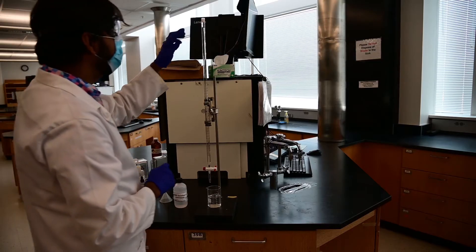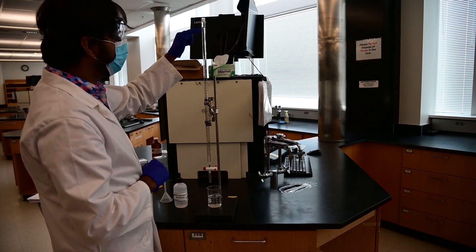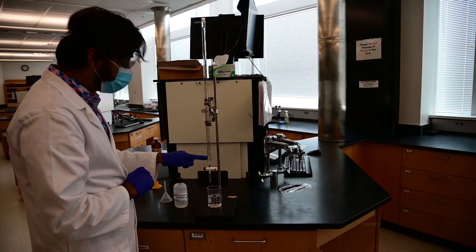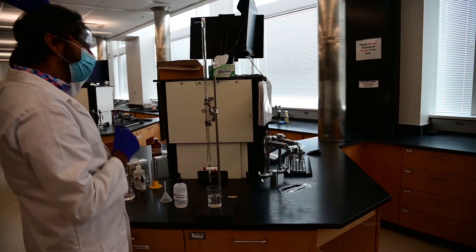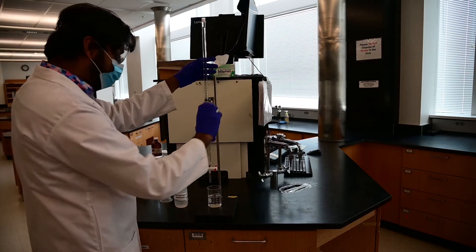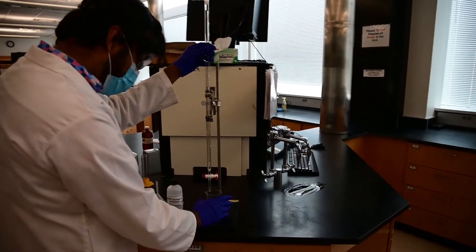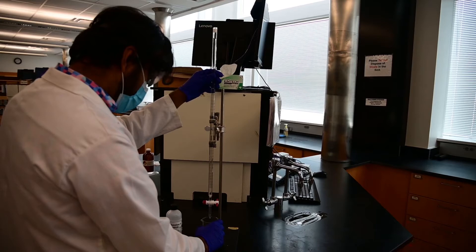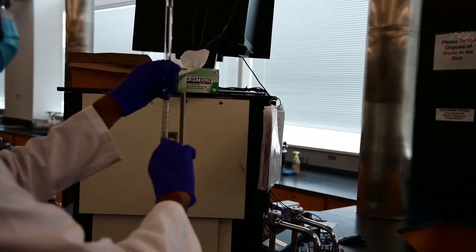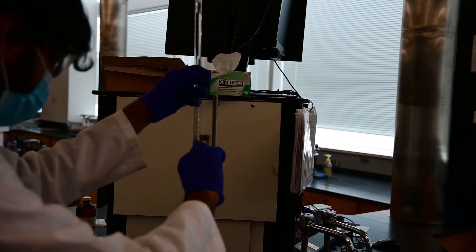For burette, the zero mark is here on the top and the 50 mark is at the bottom. And now if we zoom in, we will see that our NaOH is above the zero mark. So I have to adjust that level.